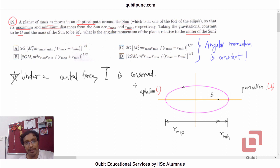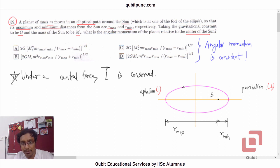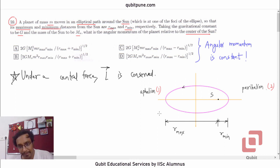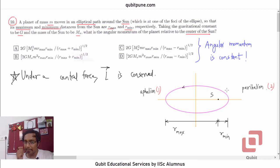Now we would like to develop a formula for this angular momentum. From the options, what we will need is the angular momentum magnitudes at the maximum and minimum positions. Let's consider the figure in which the pink colored ellipse represents the elliptical orbit. The sun is at one of the foci; this is the minimum distance and this is r_max. These two positions are called perihelion and aphelion respectively. I will call the aphelion position as 1 (r_max) and the perihelion position as 2 (r_min).